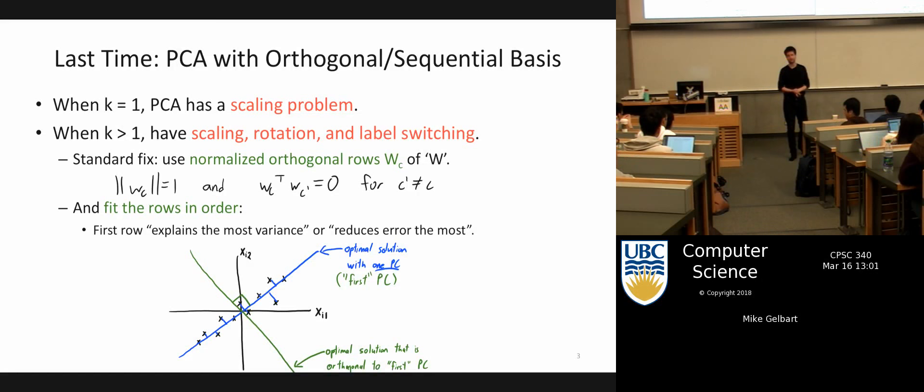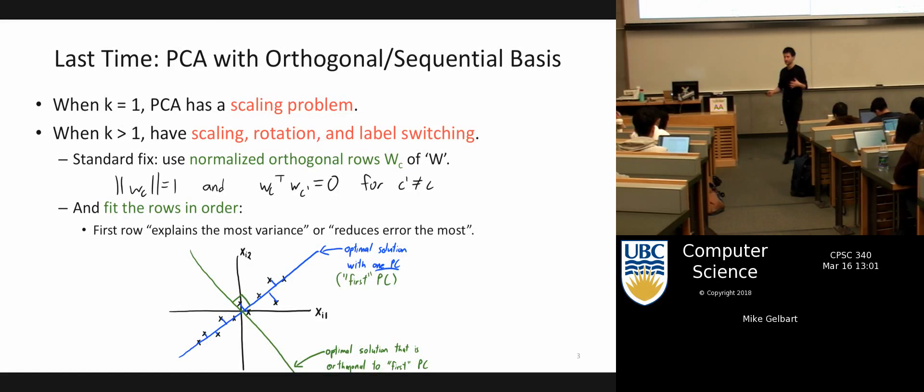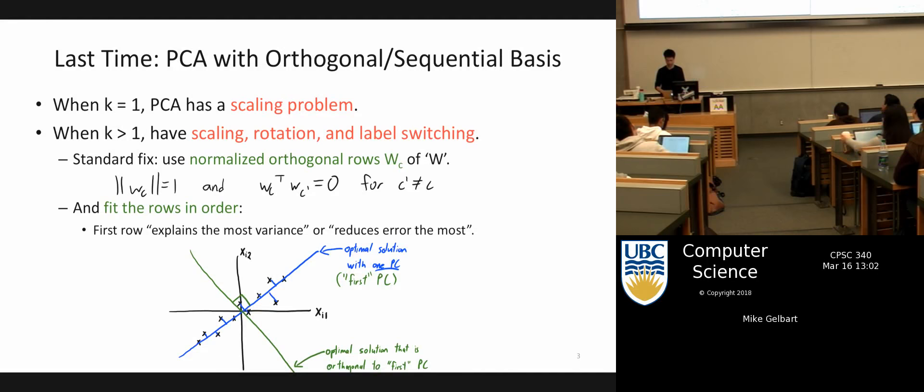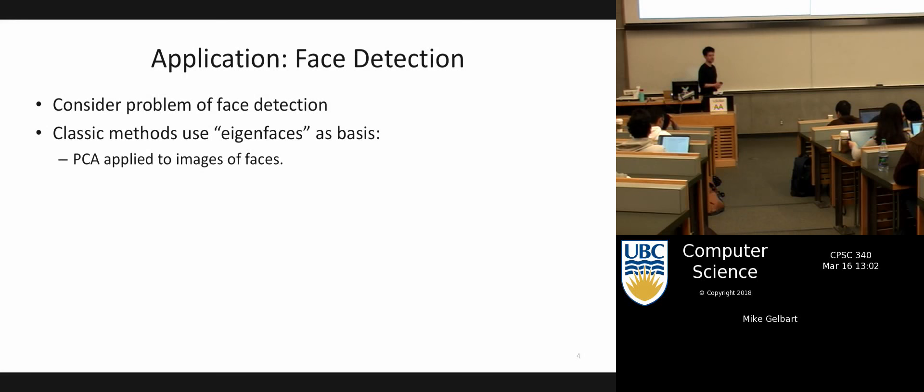We also talked about getting these principal components in order, so the first row of W explains the most variance, then the second row, and so on. If k equals 1, that first row would be the only solution. Today we'll talk about a few applications of these matrix factorization models.